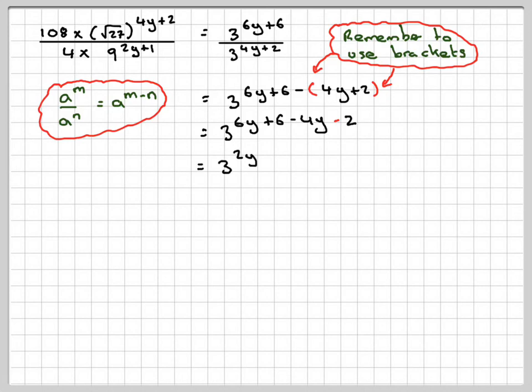That becomes 6y minus 4y, which is 2y, and 6 minus 2, which is 4.